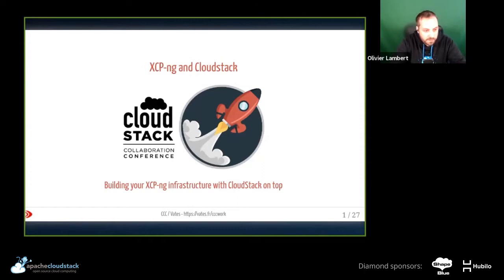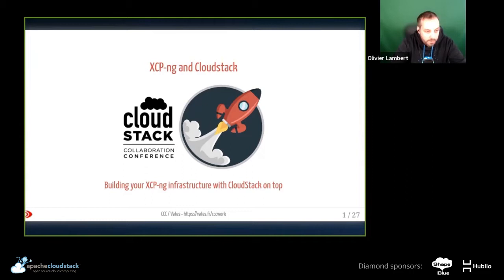For those who saw yesterday's presentation, I'll go a bit faster on those slides. I'm the CEO and co-founder of Vates — I'm also a Linux and Xen guy. I created two projects: XO (Xen Orchestra) and XCP-ng. You can download the ISO at xcpng.org — there's no registration process whatsoever, it's completely open. Vates is a French company based in the Alps, with a team of approximately 25 people. We build XCP-ng, the virtualization platform, and Xen Orchestra, the administration web UI for it.